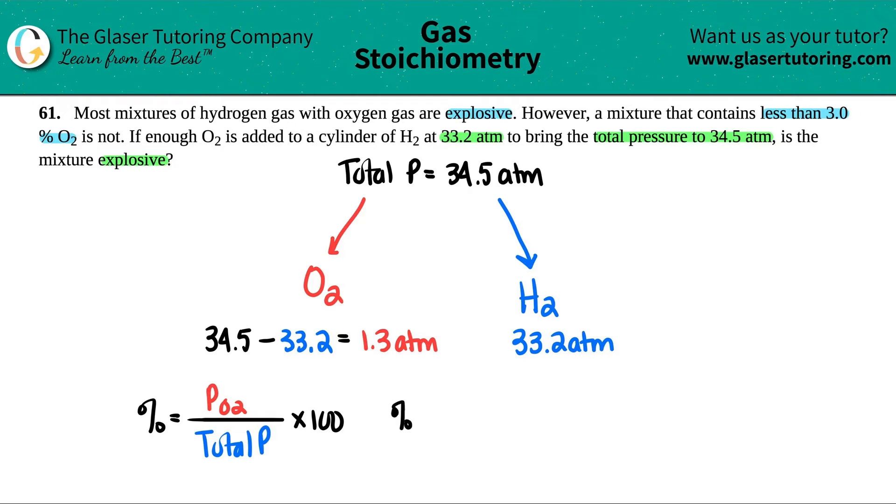So percent of the oxygen would be, we just found out that it was 1.3 atm. And the total pressure was 34.5 atm. And all we got to do is just times by 100 to find out what the percentage of oxygen is. And I'll say that this is the percentage of O2. Whatever you say on the top, that's the percentage that you're finding out for.